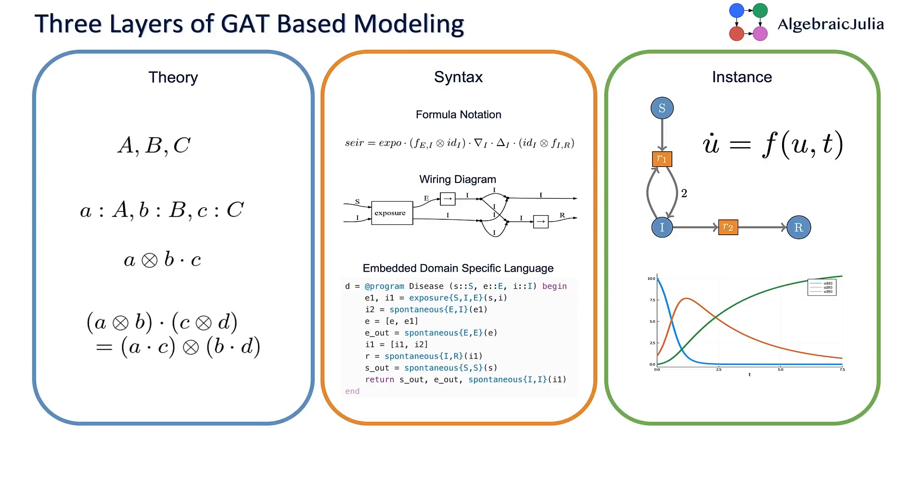We're introducing AlgebraicJulia, which is a framework for building on top of these mathematical formalisms inside the Julia programming language. The system, which is primarily implemented in a Julia package called CatLab, has three layers. First, there's an algebraic theory, where you encode your understanding of your physical systems, like the rules for how your systems behave, into universal algebra.